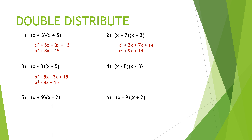You try number four. First I distribute x times x and get x squared; x times negative three is negative three x. Then negative eight times x is negative eight x, and negative eight times negative three is 24. Each of those products is revealed, and combining the middle terms gives me x squared minus eleven x plus 24.